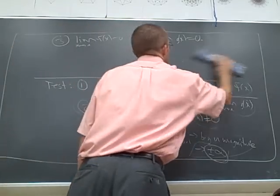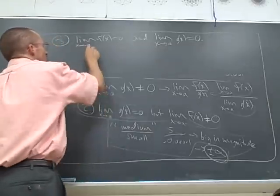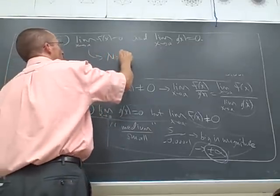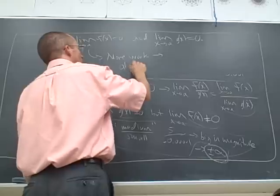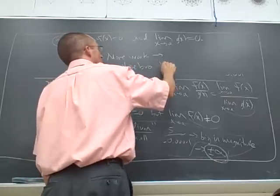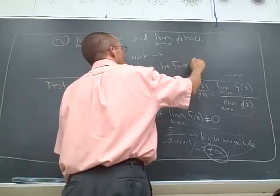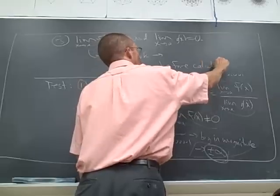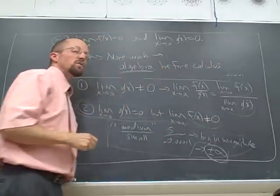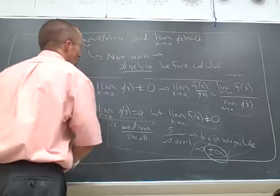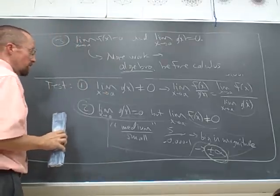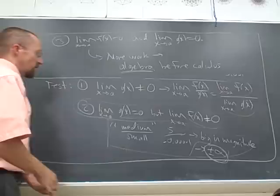So what happens in this case is you need to do more work. You need to do algebra before you do the calculus. Almost always it's that you need to do some simplification of the algebraic expression of the quotient before you actually try to take the limit. So that's the three-part test.